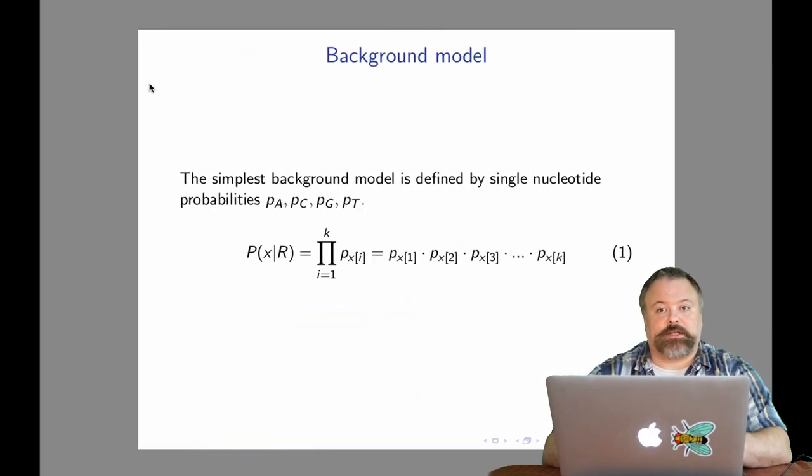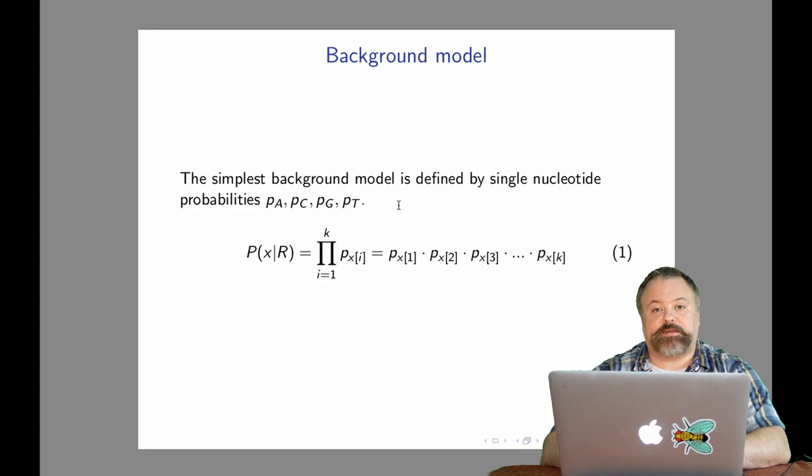A background model is essentially a probabilistic model that describes random sequences. In other words, this is defining our single nucleotide frequencies, p sub a, p sub c, p sub g, p sub t, and any particular sequence x, given this random model, is defined as the product over these single nucleotide frequencies for the characters in that sequence - the probability of the character at x1, x2, x3, and so on.